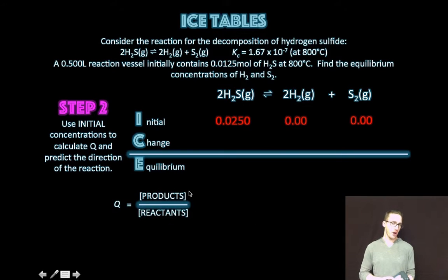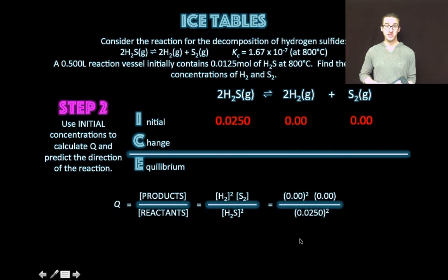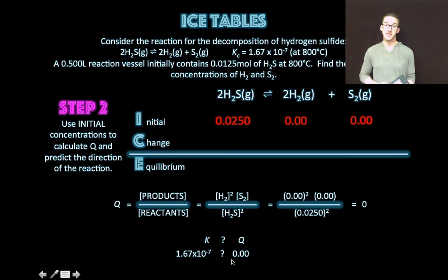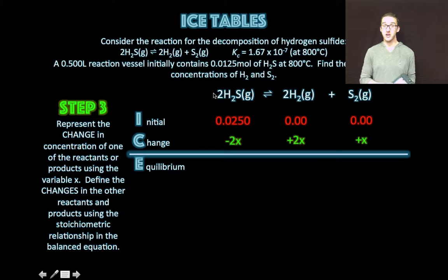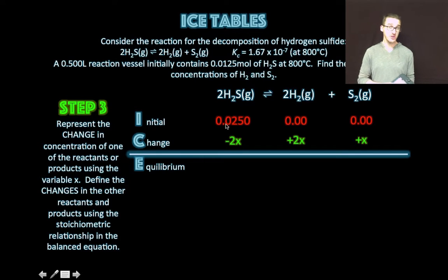Q equals concentration of products over concentrations of reactants. Define it for this reaction, plug in initial concentrations, and Q equals zero. Comparing K to Q: even though K is very small, it's still larger than zero, so the reaction will proceed to the right. Represent the change in concentration using variable X. For H2S it's minus 2X because the reaction shifts right and we're consuming it. H2 and S2 are each defined positively based on the stoichiometry of the balanced chemical equation.